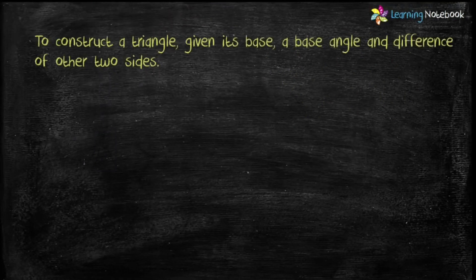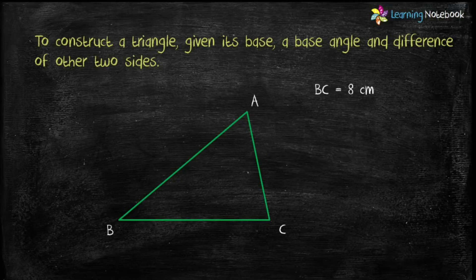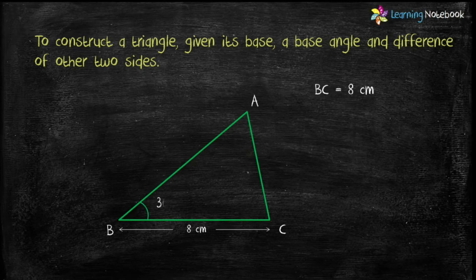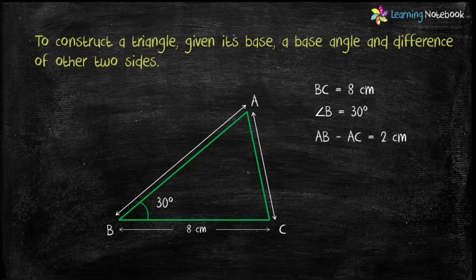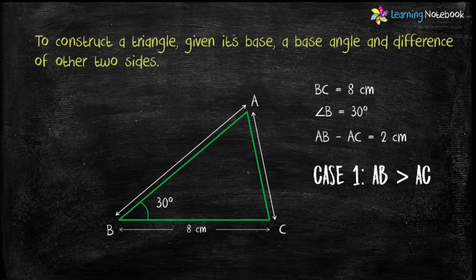Let's see both the cases. In a construction question, if we are given base BC, angle B as base angle, and AB minus AC, let's say 2 cm, then students it will be case 1, which is construction of AB greater than AC. Therefore in such a case the triangle will look like as shown here.